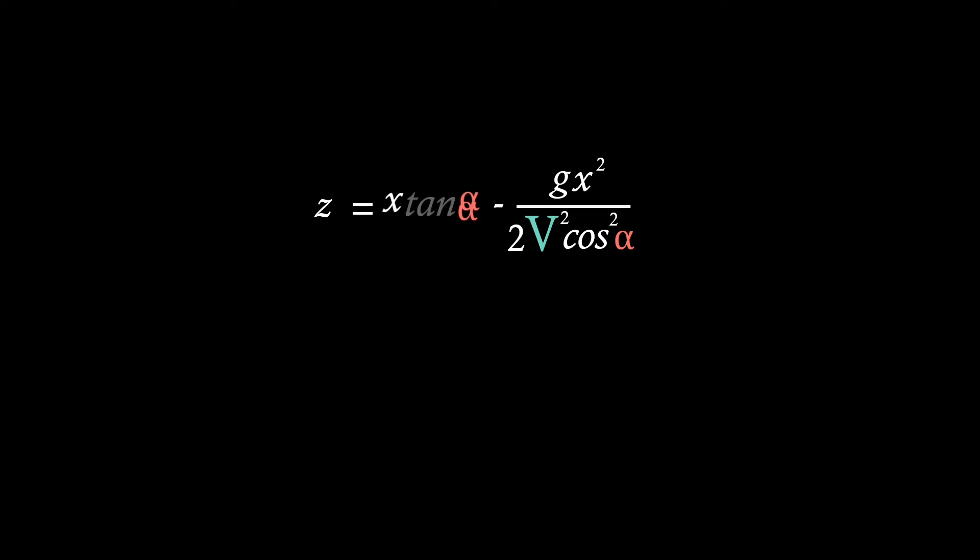Then after making one simplification to get tan alpha, we've actually formed the trajectory equation where z equals x tan alpha minus g x squared over 2v squared cos squared alpha. Thus we have produced an equation for our curve with no dependence on time.